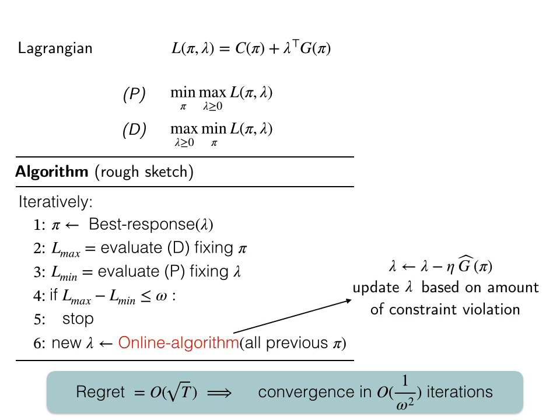Intuitively, the online learning subroutine updates λ based on the amount of constraint violation. But the question is, how do we know how much we are violating the constraints by?